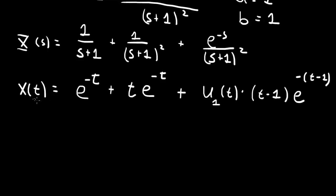And that's the solution of the equation. This first piece is the homogeneous solution arising from the initial conditions x of 0 equals 1 and x dot of 0 equals 0. And this last piece is the kick that the solution gets from the Dirac delta function inhomogeneous term.